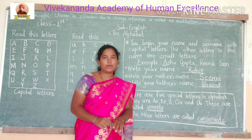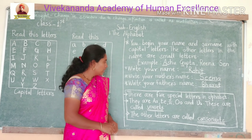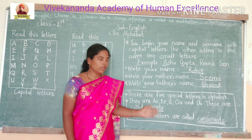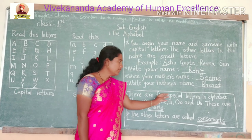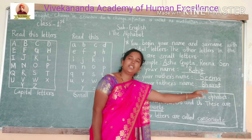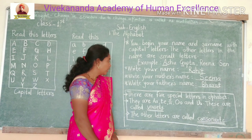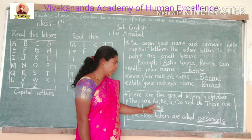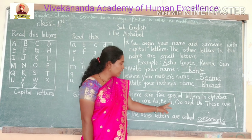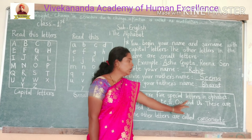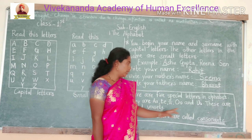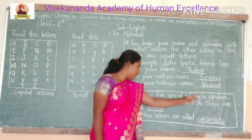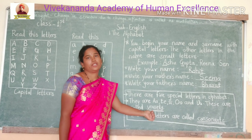All this information is about alphabets. There are five special letters in the alphabet: A, E, I, O and U. These five letters — A, E, I, O, U — are called vowels.